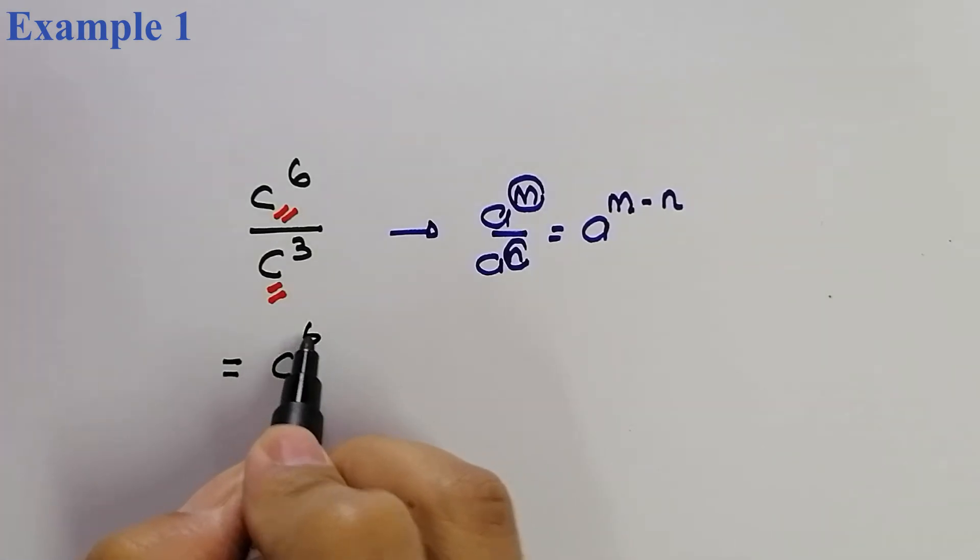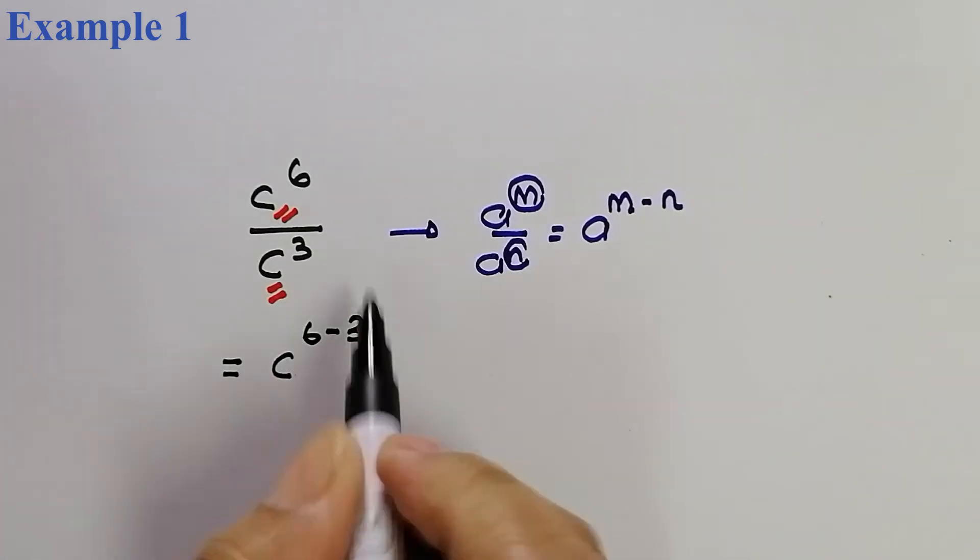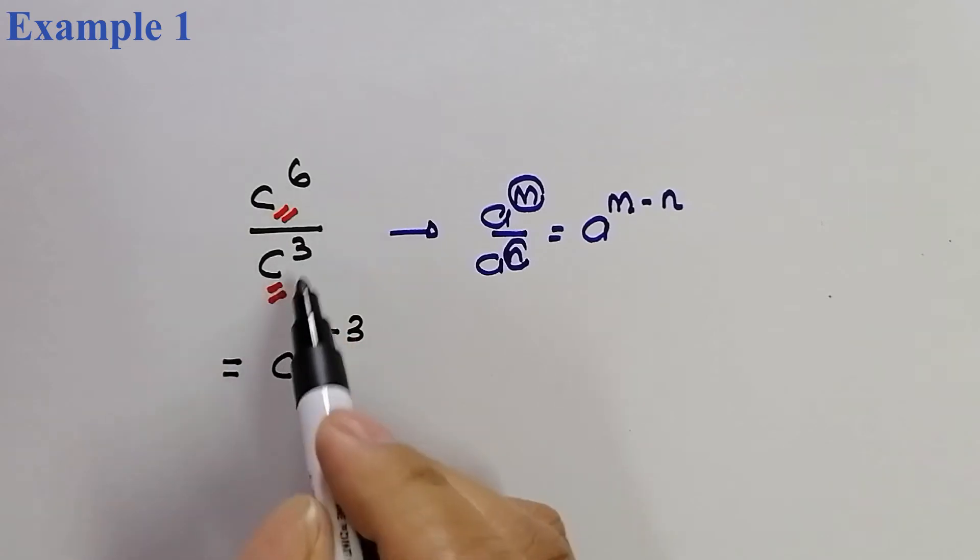So, power dia 6 ini, kita akan tolakkan dengan C plus division. Jadi, C power of X.